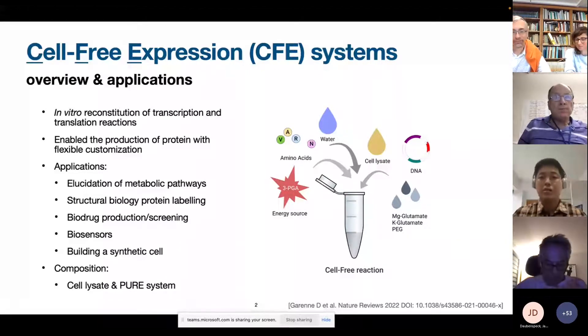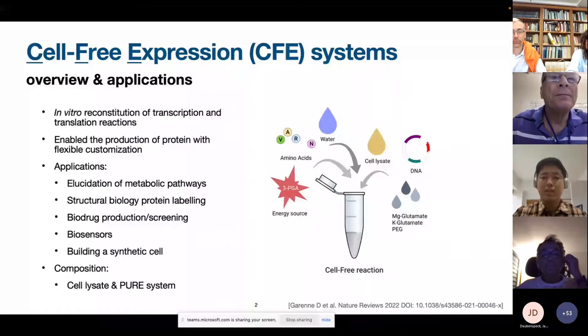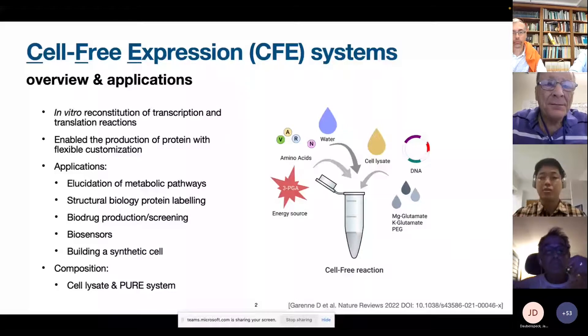Basically, the cell-free expression system is composed of three main components. The first component is the feeding buffer, which comprises the water, amino acids, energy sources, salts, and other cofactors.